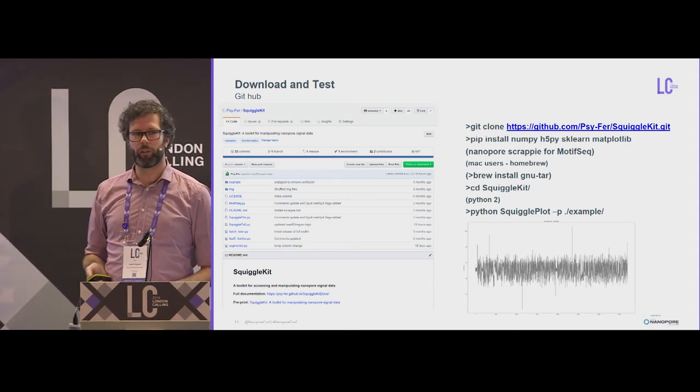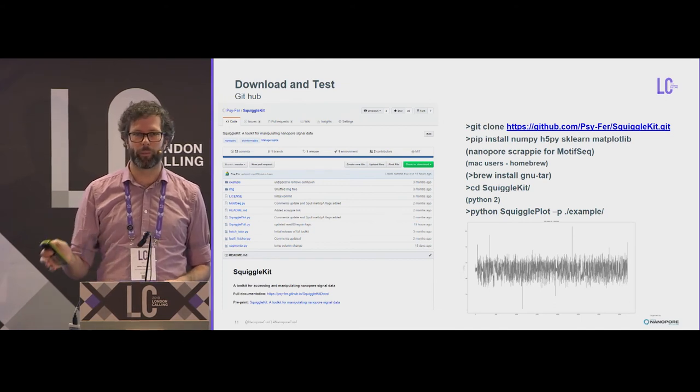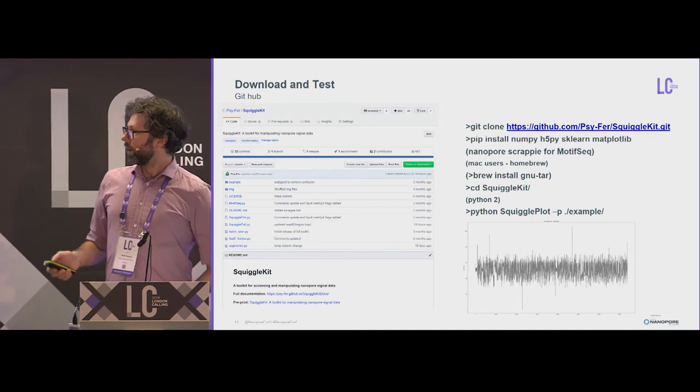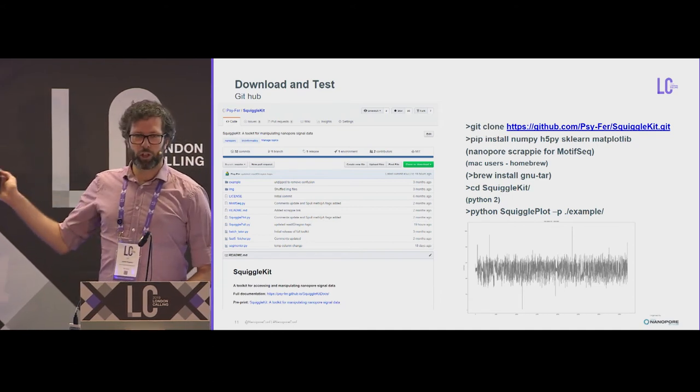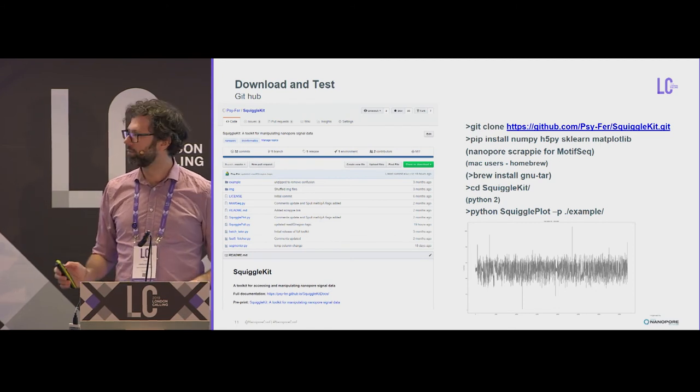And for Multi Fast5, I've been using the ONT API. And that's on a pip wheel, so it's nice and easy to install. And just like that, you can install it and run it. No compiling. Just works.